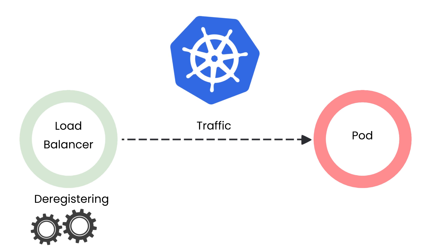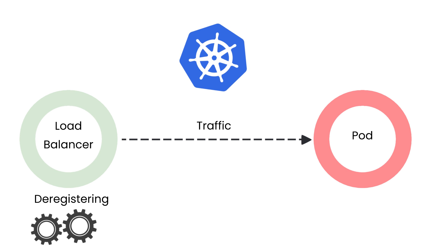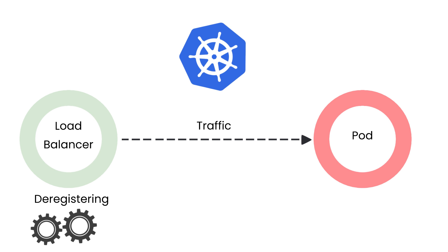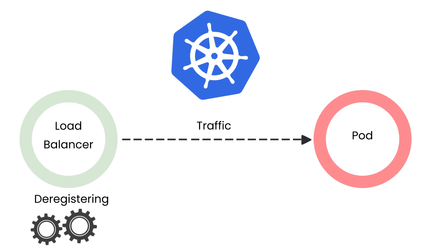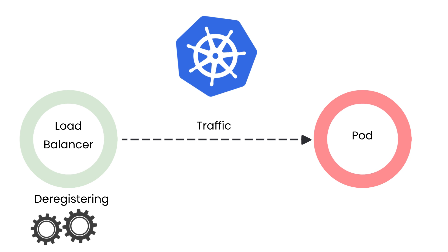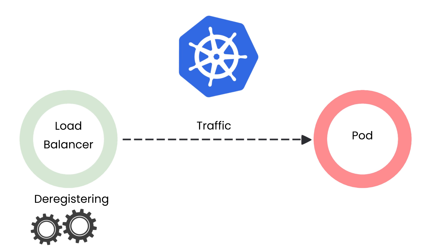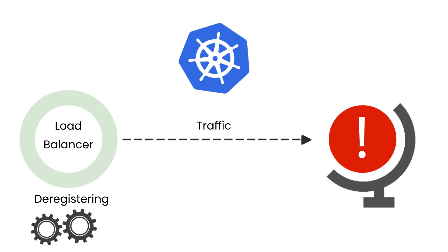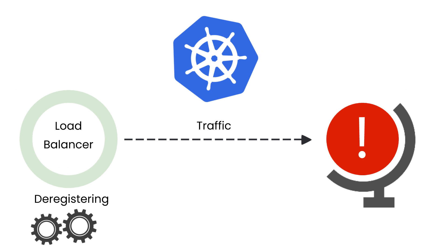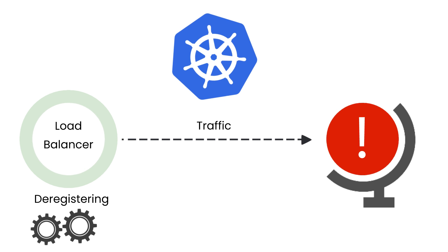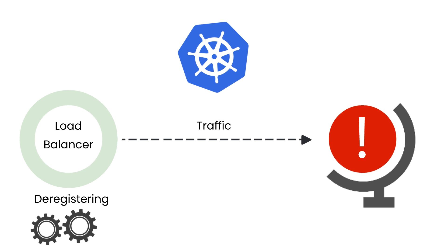This is a great process for you to implement in your application. But there might be a race condition where your application — the pod — will ask the ingress controller to stop sending traffic, but it will finish draining all of its connections and terminate before the ingress controller has finished the deregistration process. In this case, we will continue to send traffic to a terminated pod, which goes nowhere and our users will receive error codes.